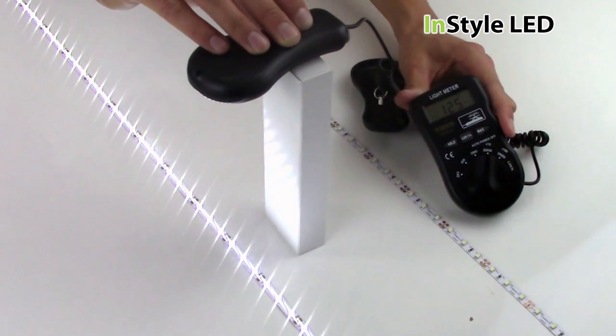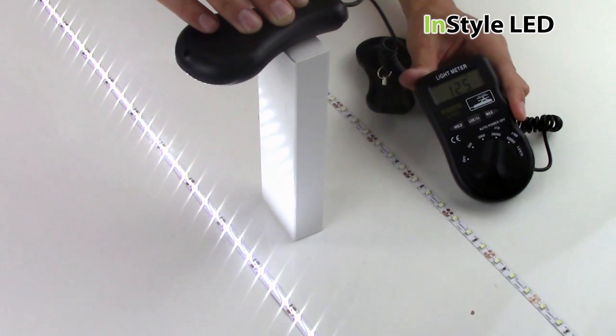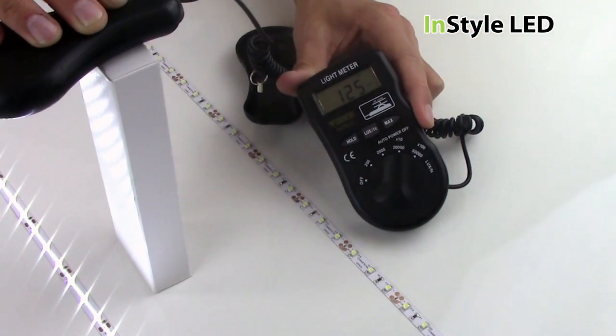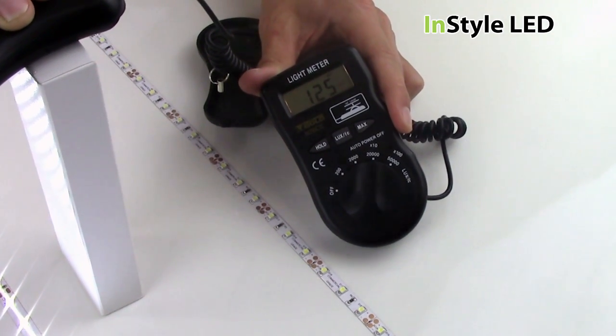Both strips are at 100% brightness and holding the lux reader at the same height. The lux meter is set at times 10, so the actual reading is times 10 of this amount.